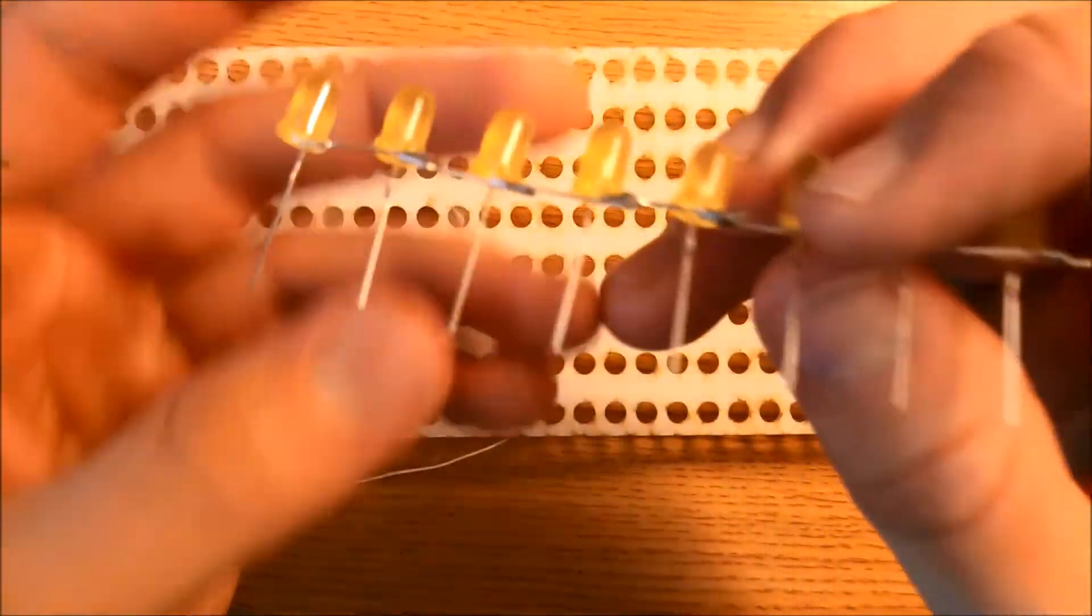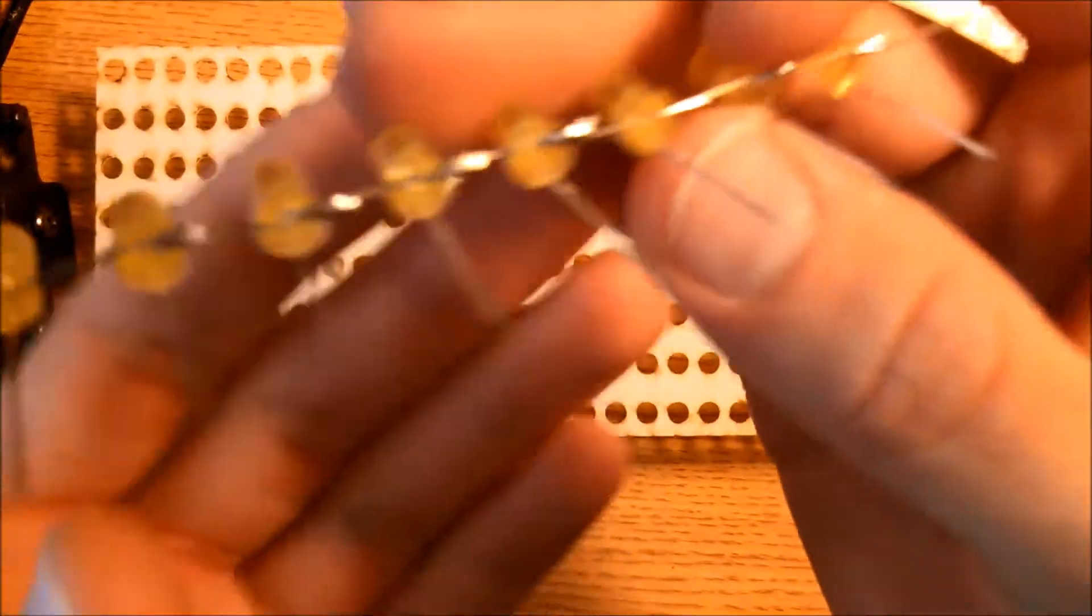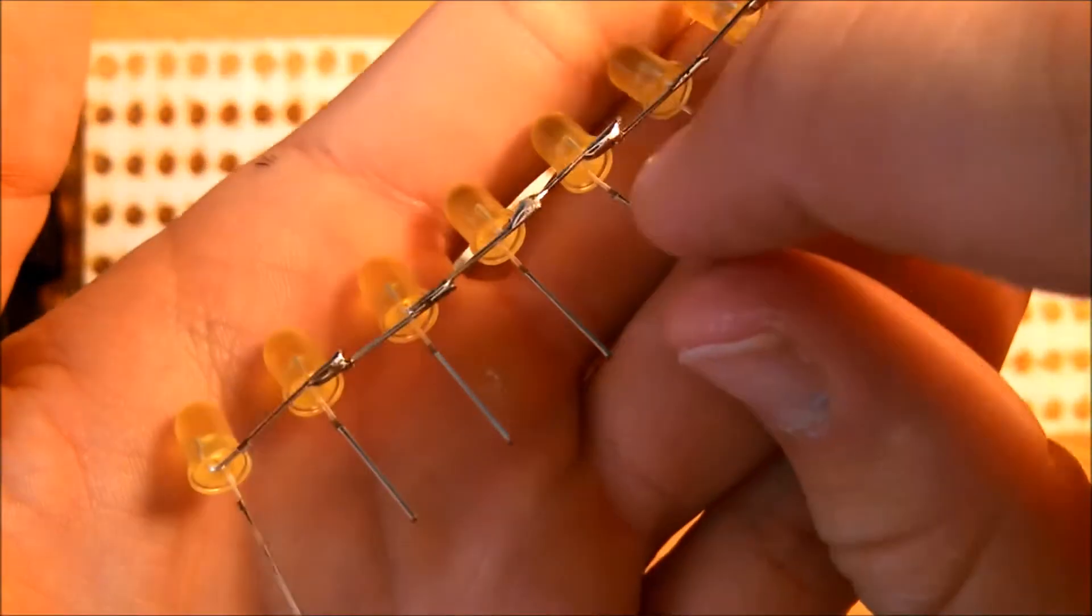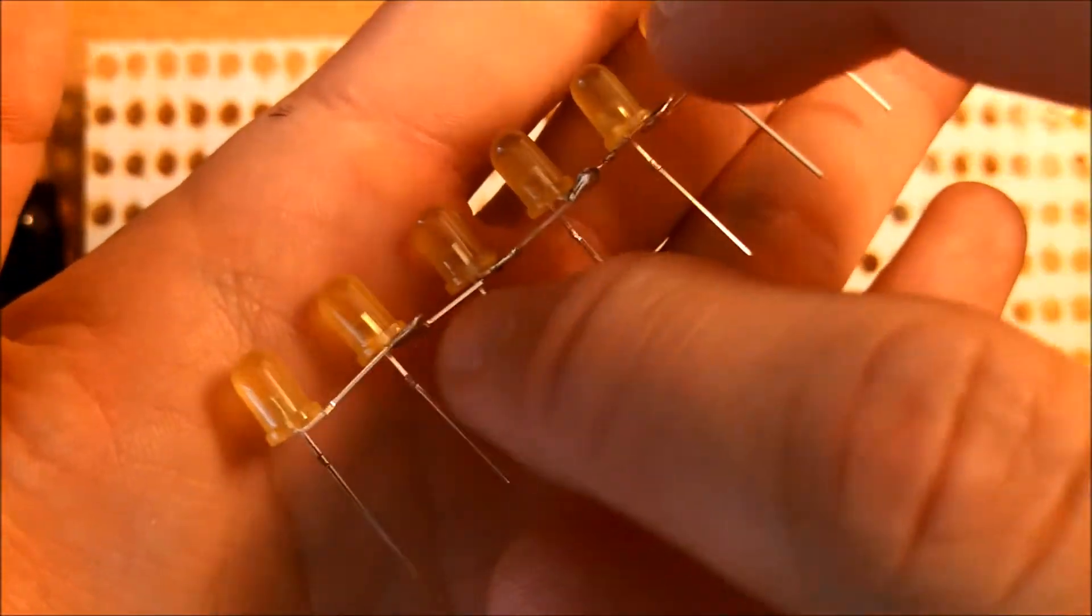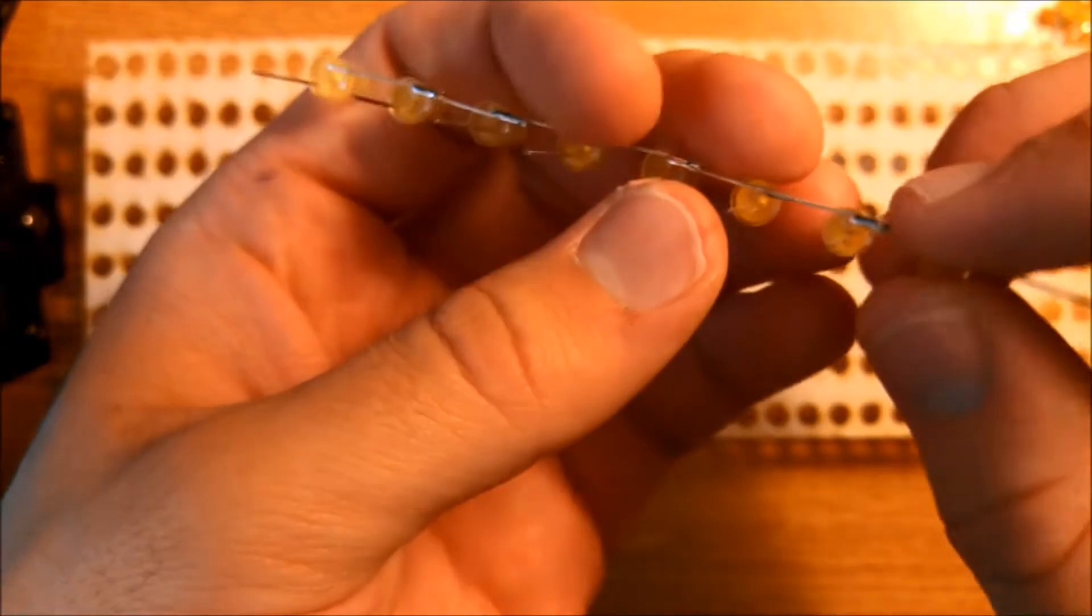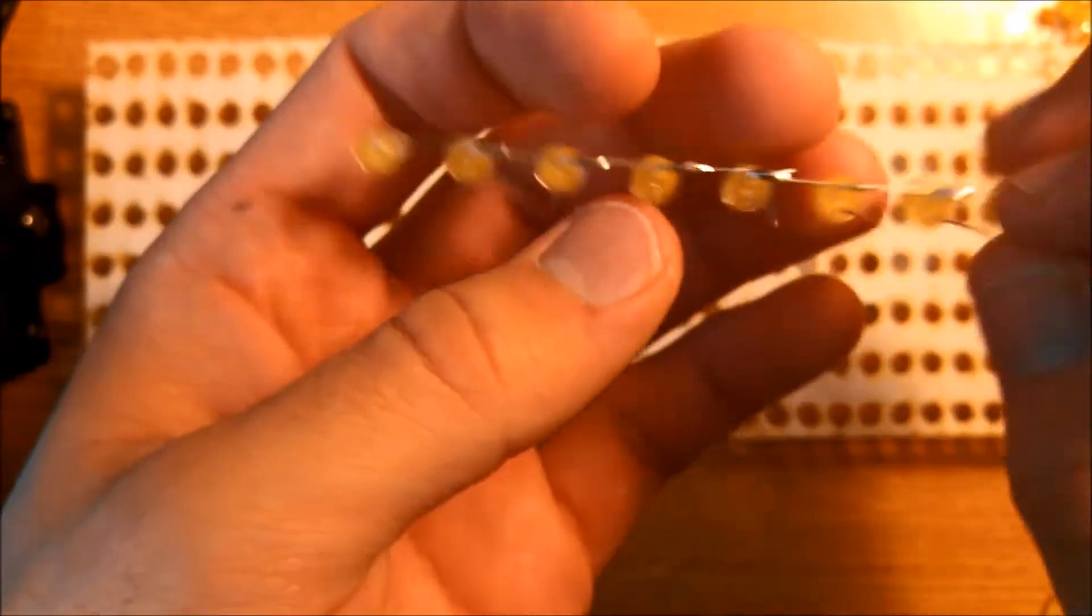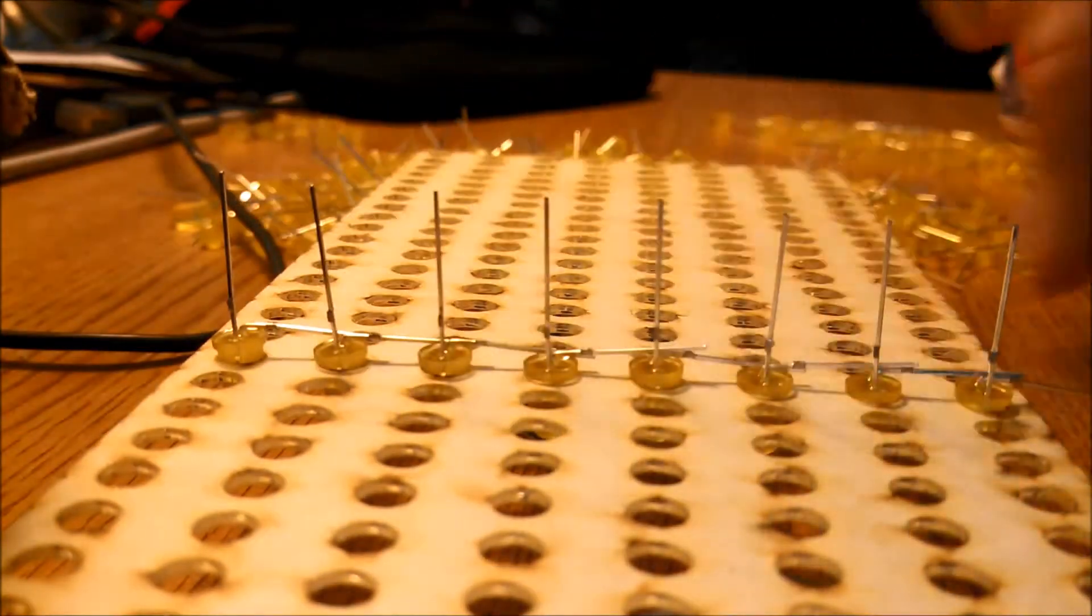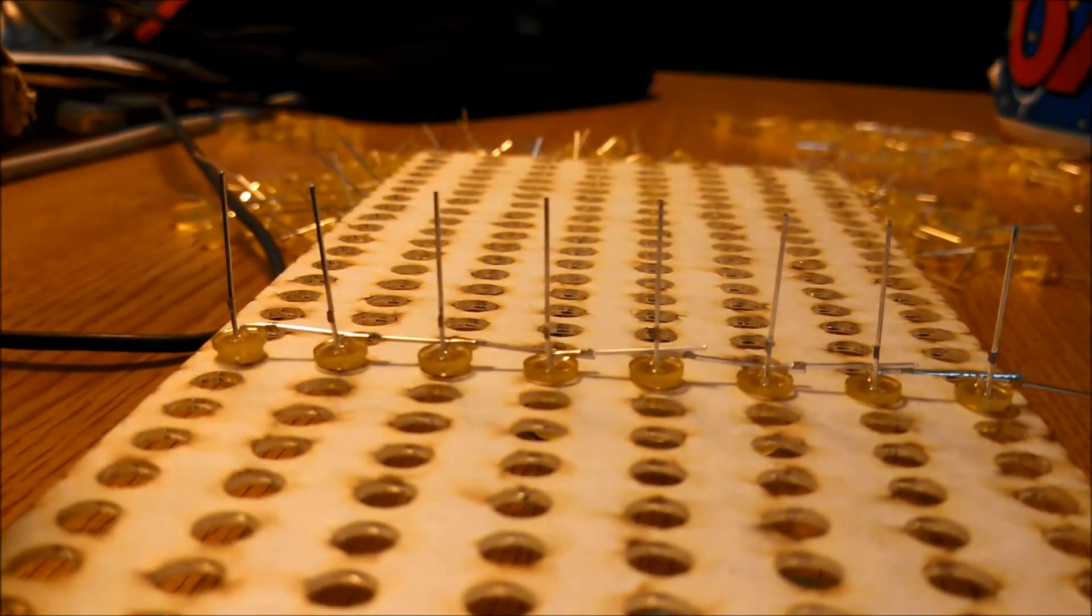You want the LEDs to look something like this. You have solder connecting all these LEDs together. Let me show you what this procedure looks like at another angle. We have all these LEDs placed and we're going to solder them together.